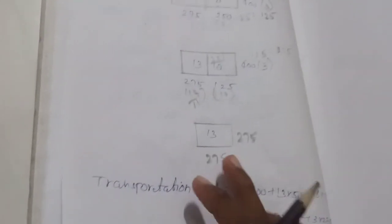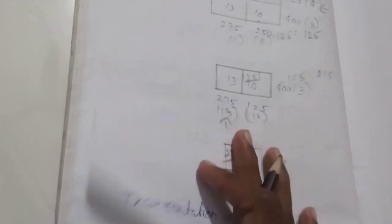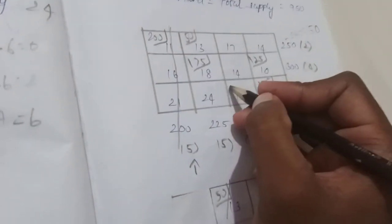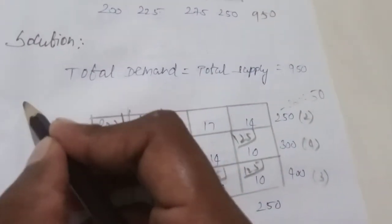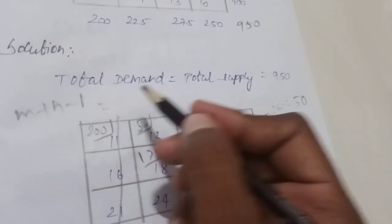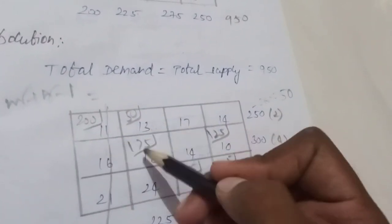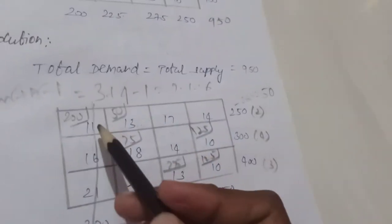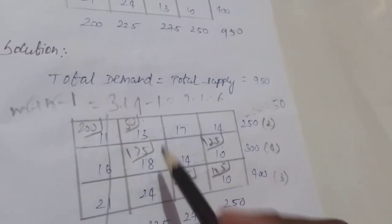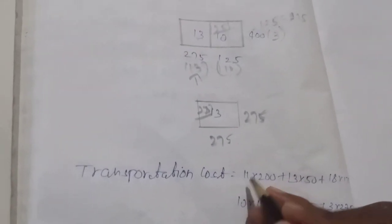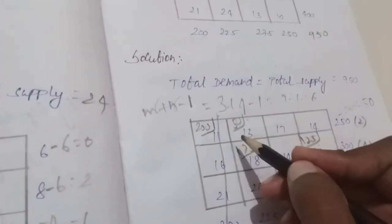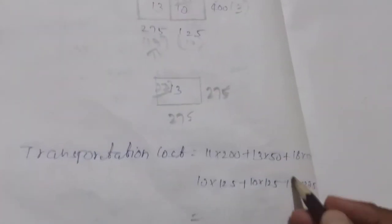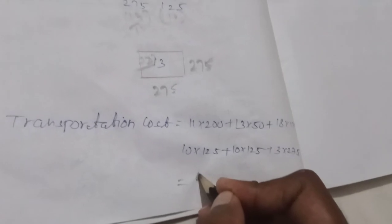The total cost is equal to 275. Now we verify the solution using the condition m plus n minus 1. If rows m equals 3 and columns n equals 4, then 3 plus 4 minus 1 equals 6. We count the allocations: 1, 2, 3, 4, 5, 6 — the solution is non-degenerate. We then calculate the total transportation cost by multiplying each allocation by its corresponding cost and summing.